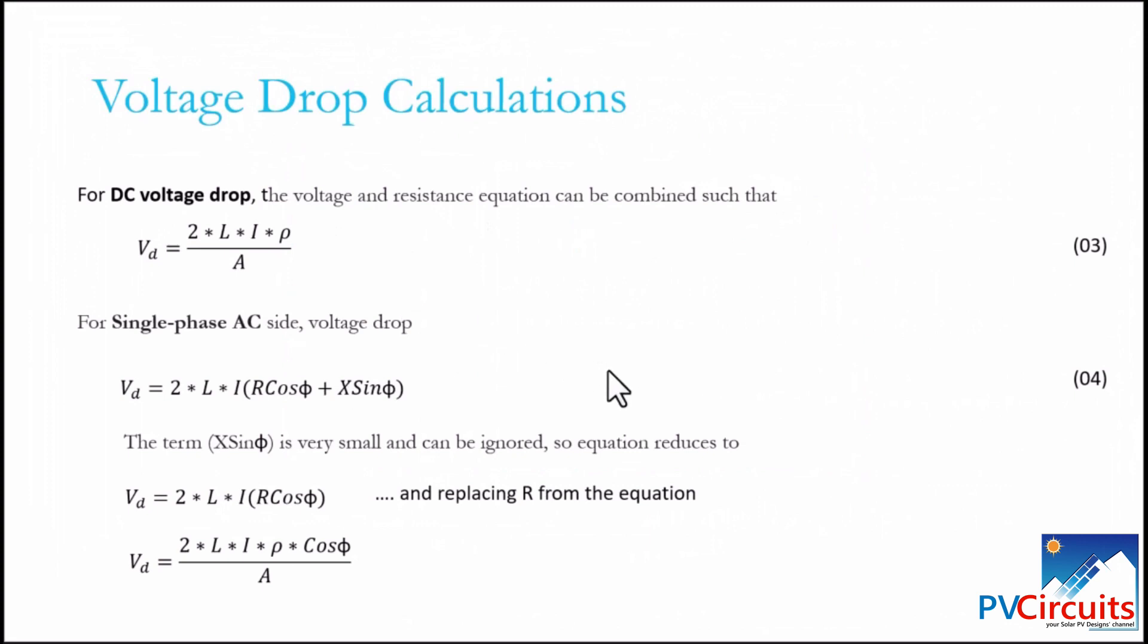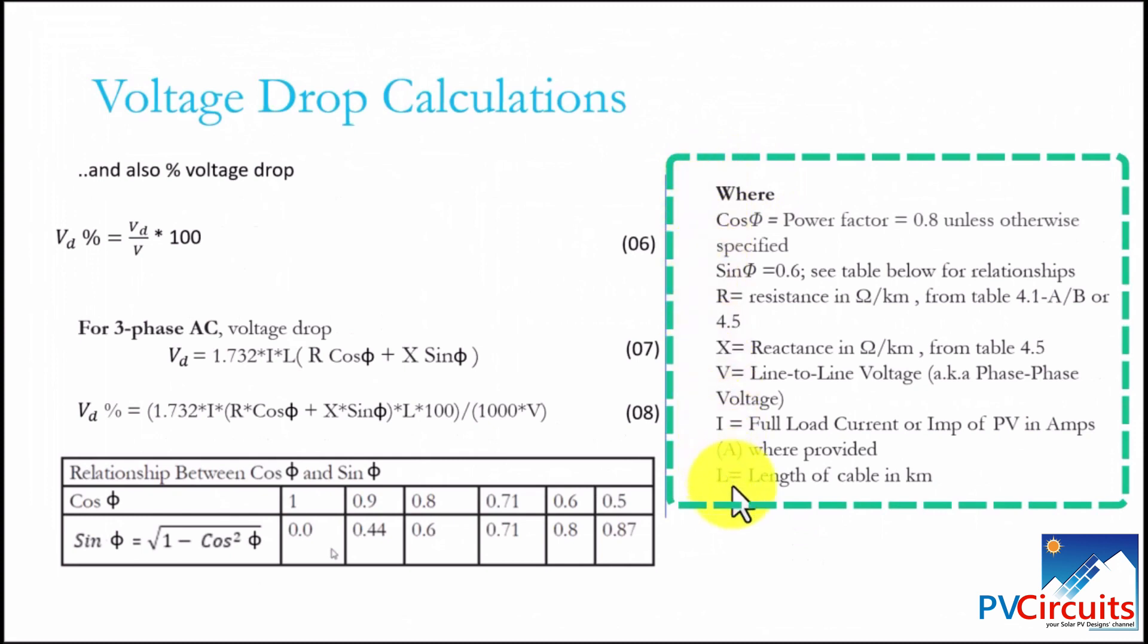And for single-phase AC, the voltage drop equation can be expressed as equation 04, which the factors in the equation are as defined here. We have the power factor, which if not given by the manufacturer of the inverter or the system or the specified for the system, use 0.8. Then we have the relationship between the power factor and sin phi, which is expressed in this table here. Then we have X being the reactance and V in that equation being the line-to-line voltage, also known as phase-to-phase voltage. Where I is the full load current or IMP of the PV in amps, where provided and L is equal to length of cable in kilometers.